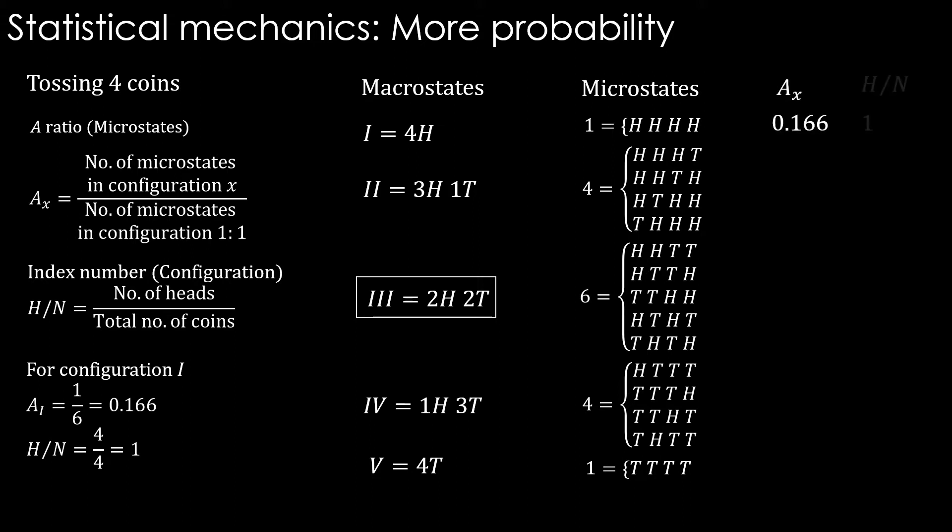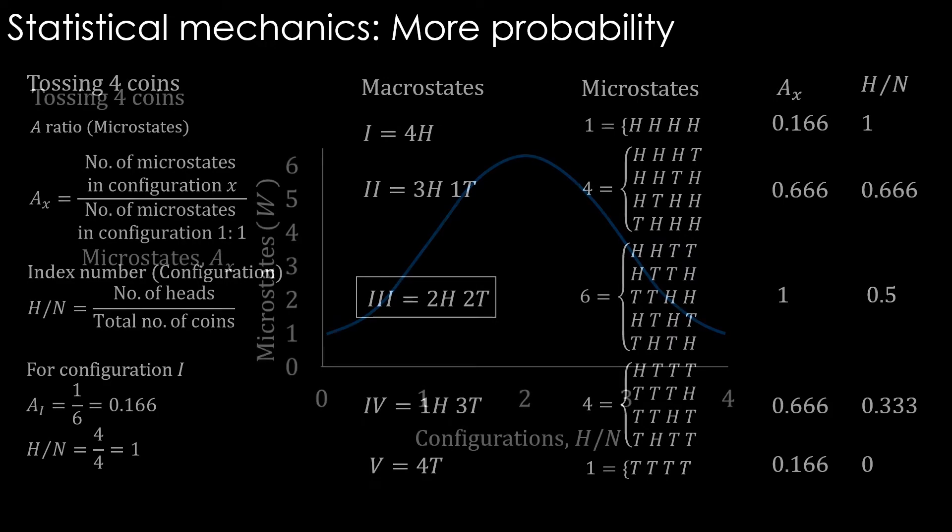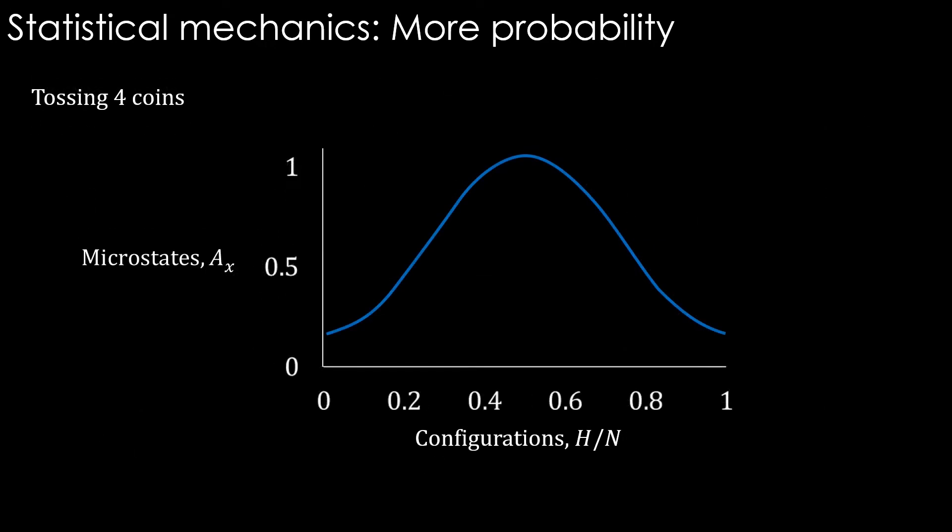Now, these are the values of A ratio and index number for each configuration. Graphically, it is going to look the same. Again, note that the middle configuration has the highest ways of occurring.